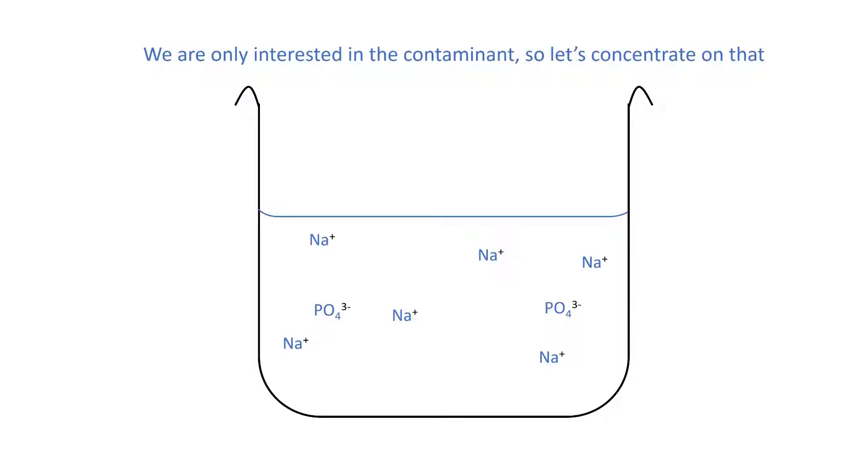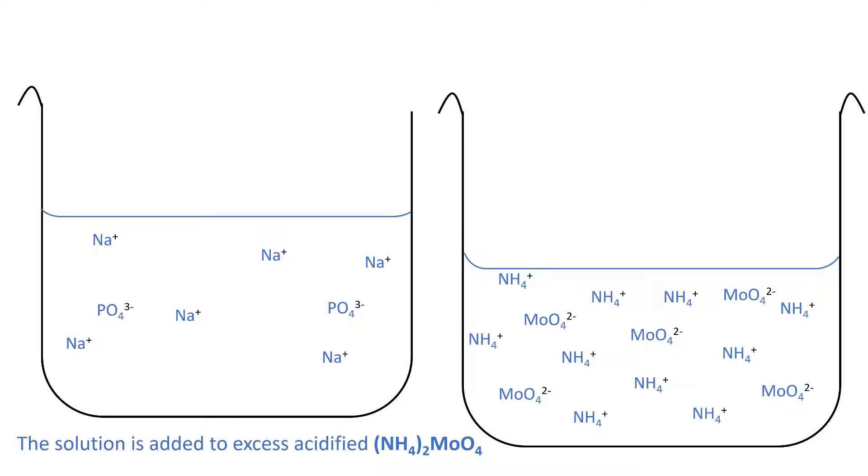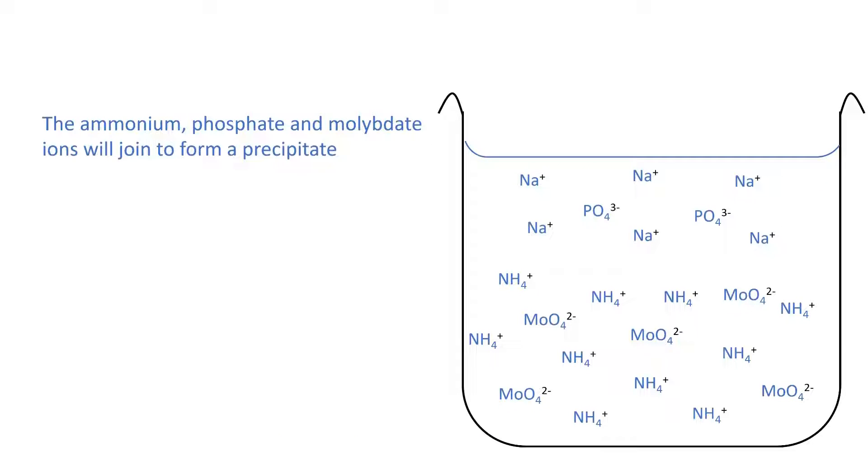Now, the question states that our solution was added to excess acidified ammonium molybdate. Let's bring that in, and then add our solution to it. The ions can now all interact, and the ammonium phosphate and molybdate ions can join to form a precipitate.